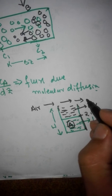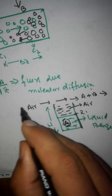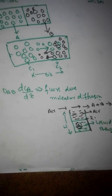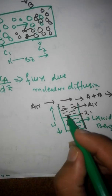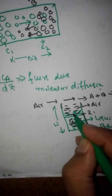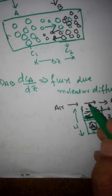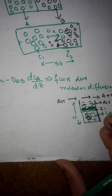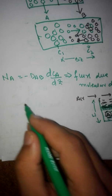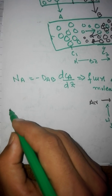Benzene A evaporates into the air and is carried away. In this region there is a mixture of A and B. Molecular diffusion takes place at the liquid-gas interface in this narrow stationary region. When A transfers upward, it is also carried away by air through convective mass transfer.